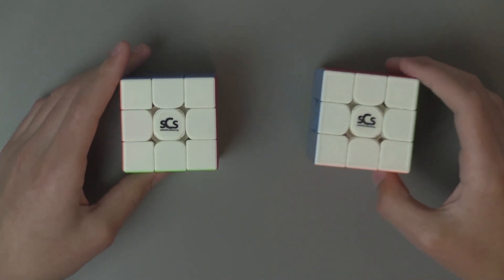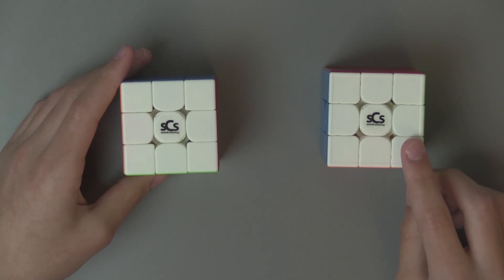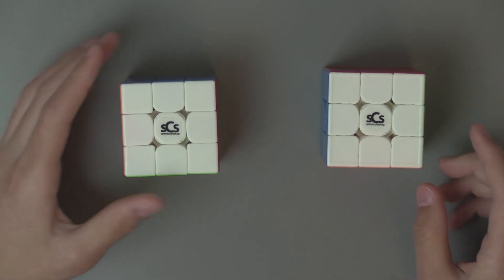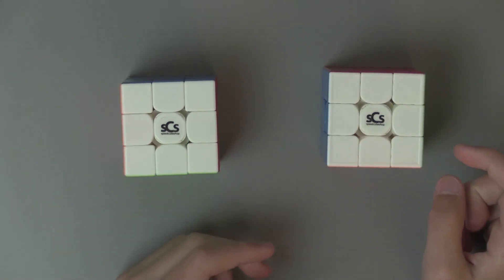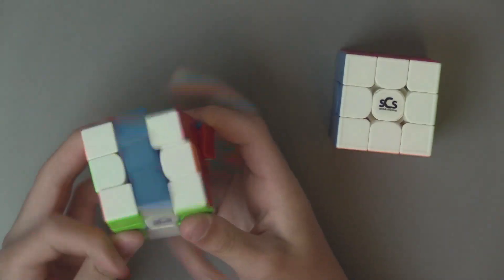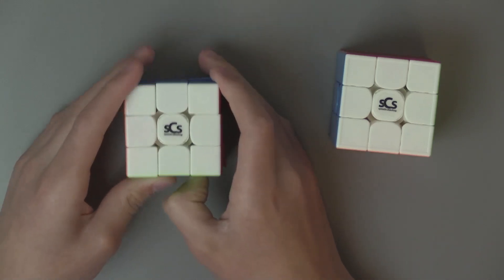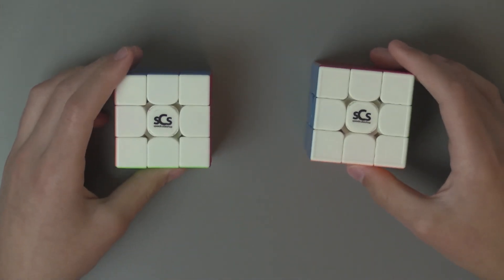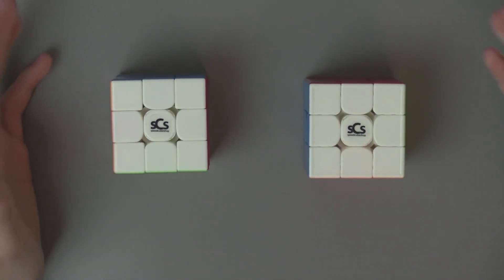But I would recommend the GTS-3M because it's cheaper, and I think it's just more fun to solve with. Because on the WRM, unless you like light magnets, it's just the magnets aren't as enjoyable, so the solving isn't as enjoyable. And if you have a better cube, you'll probably find yourself solving it more.